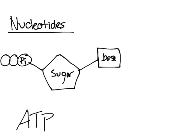For ATP, I like to think of the whole thing as a house, pool, and a garage. The base is the garage, the sugar is the house, and the pool is the phosphate group. For ATP specifically, the sugar is ribose, the base is adenine, and there are three phosphate groups attached to it.